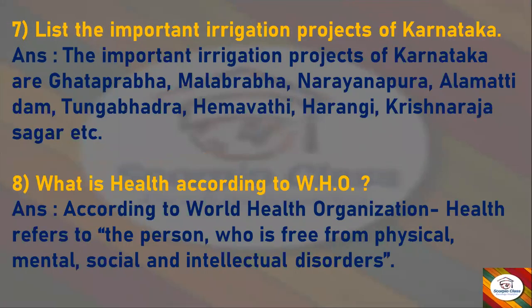Next question: List the important irrigation projects of Karnataka. Answer: The important irrigation projects of Karnataka are Ghataprabha, Malaprabha, Narayana Pura, Alamati Dam, Tungabhadra, Hemavati, Harangi, Krishna Rajasagar, etc.